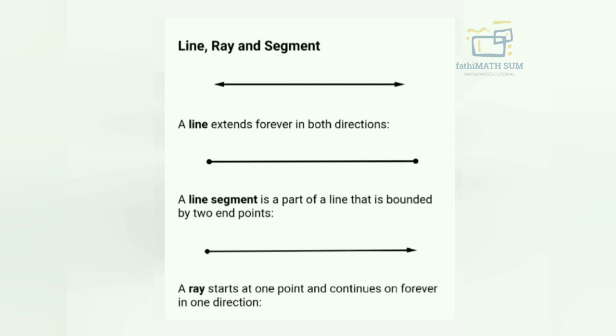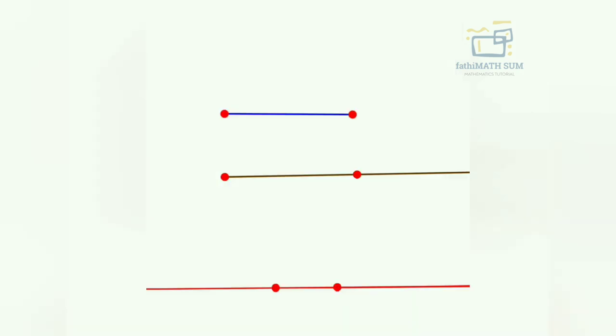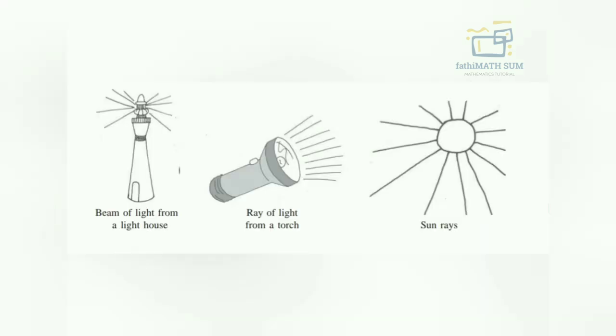We have the line segment - both ends are fixed. We have the rays - one end is fixed, the other one is endless. And what about the lines? Both ends are endless. It is not at all fixed in both ends. See on the screen, you can see some examples for rays. One end, the original point, is fixed and the rays are coming from that particular point and directing to an endless point. So one point is fixed, another point is endless.